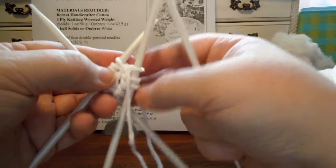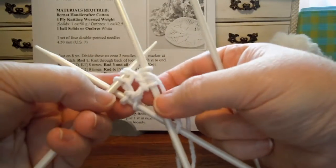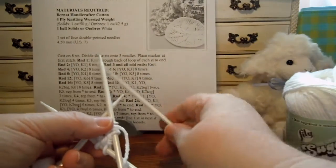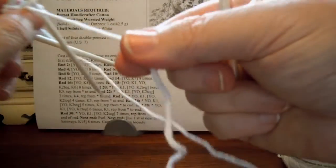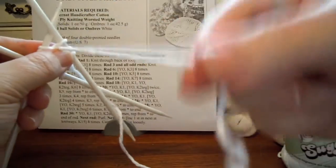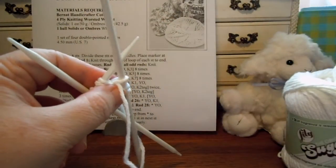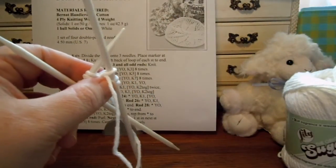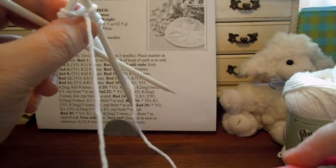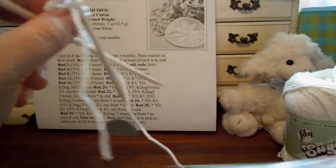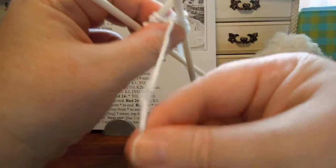So now I'm ready to go. I'm all hooked together and it's in a circle. So I'm ready to work. It says to place a marker, but I don't use a marker because I use this tail that I started with as my marker. And when I come back around to that tail, I'll know that I finished a round. I'm going to cut it a little bit shorter. See my tail there? That'll be my stitch marker.